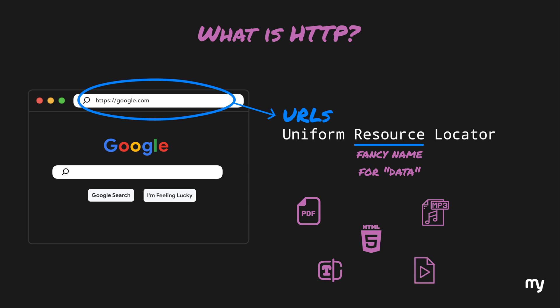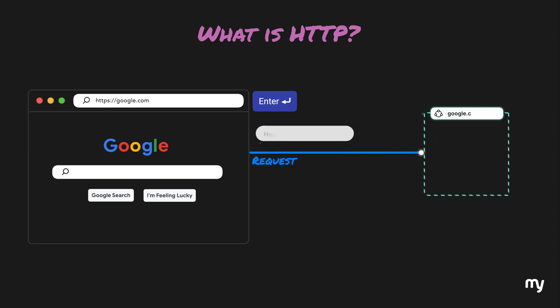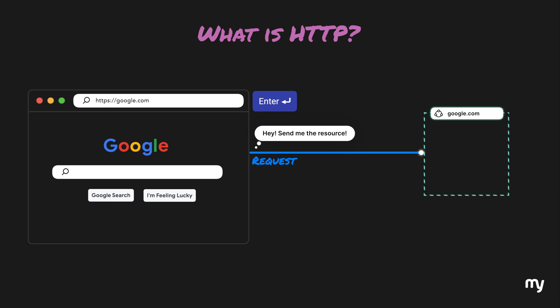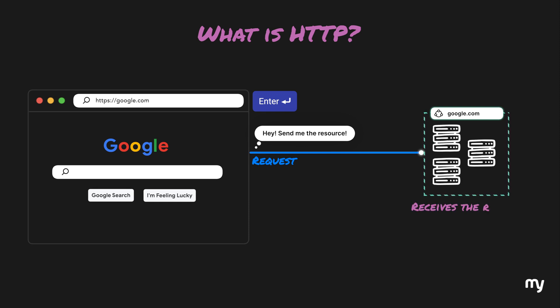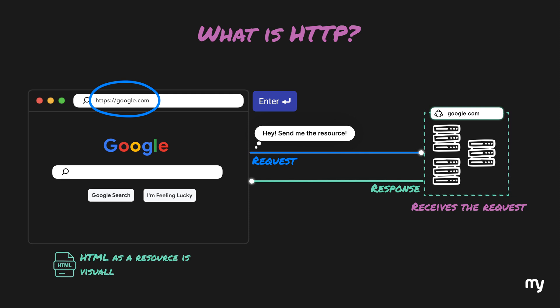So when you type in the URL and press enter, your browser sends a request to the web address saying, hey, send me the resource you have on this URL. The website, which is essentially a program running on a computer somewhere, receives the request and responds back with the resource. So if you type in google.com on your browser, you will simply receive a web page as a resource, which is visually presented on your browser.